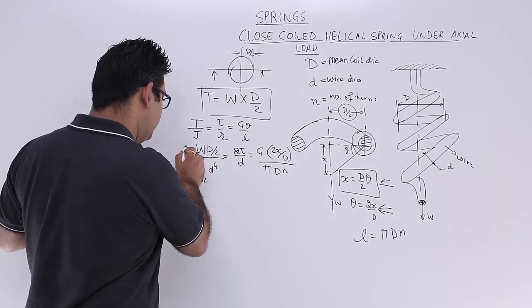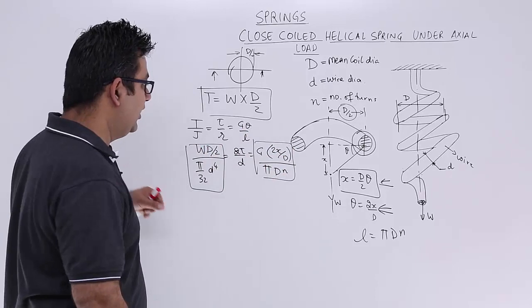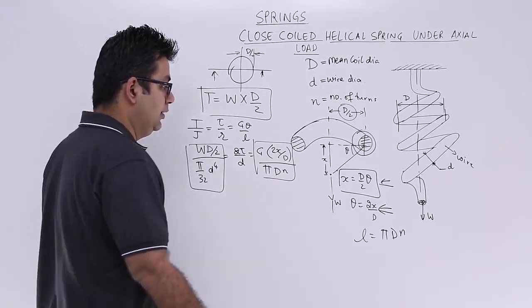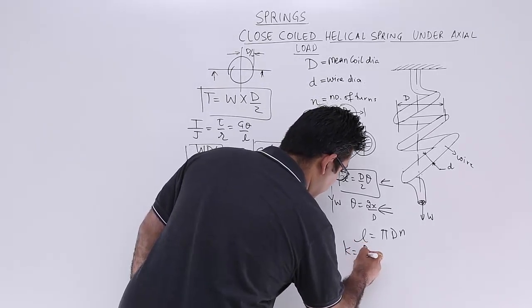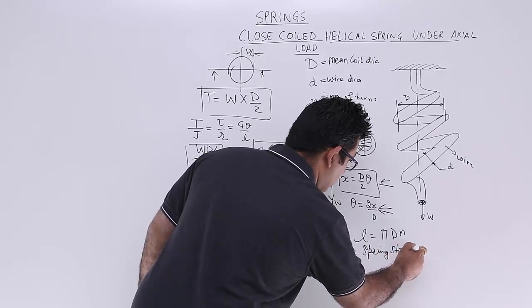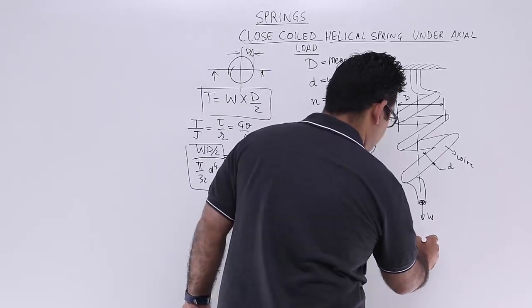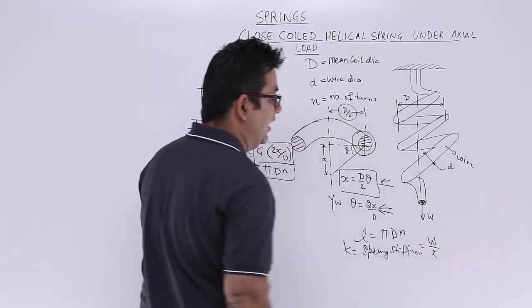So we will equate this part and we will equate this part to find the value of a property of the spring material that is K. That is called the spring stiffness, the spring stiffness. And the units.